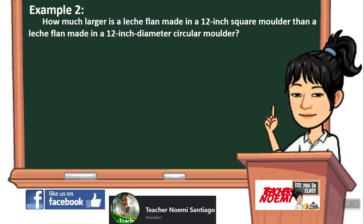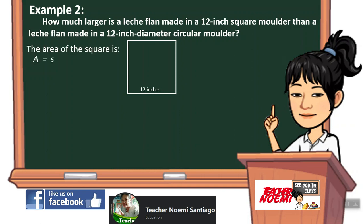First, we make an illustration for each. A square with 12 inches. The area for the square is A equals S times S, or S squared. If the side is 12 inches, we have 12 inches times 12 inches. The area of the square is 144 square inches.